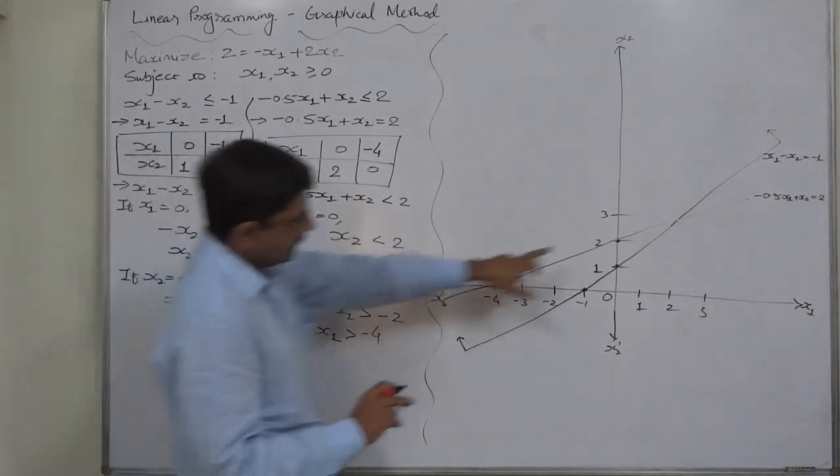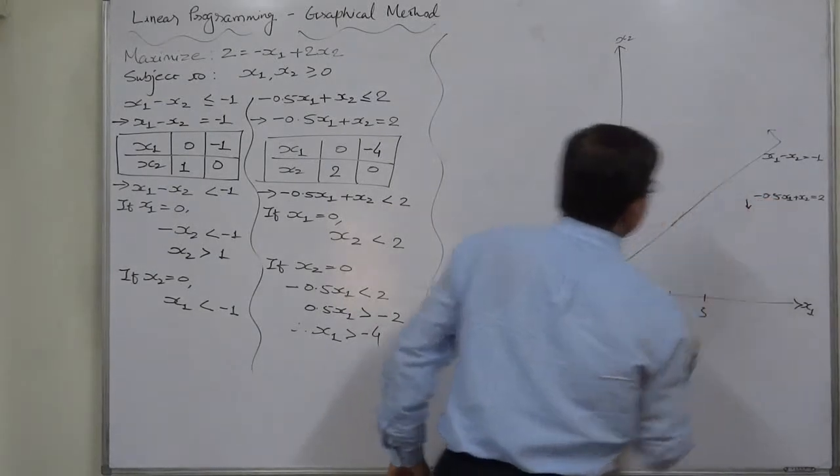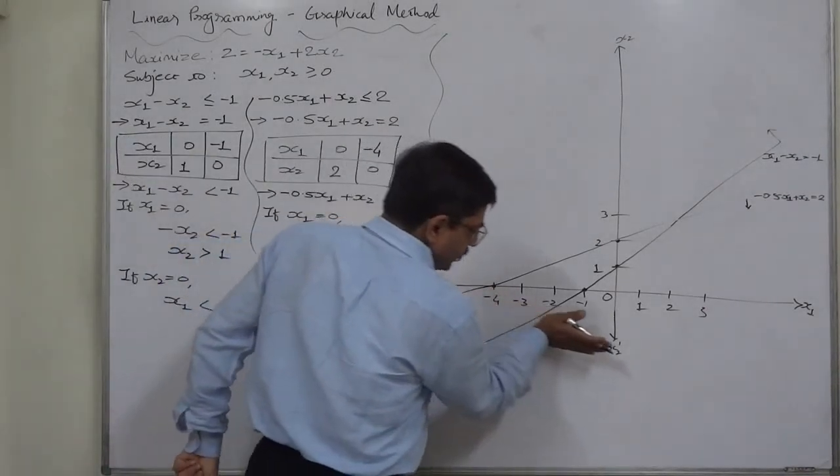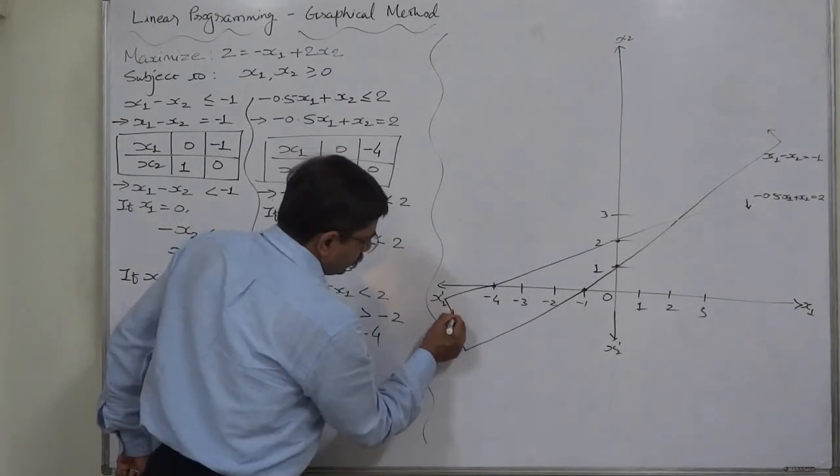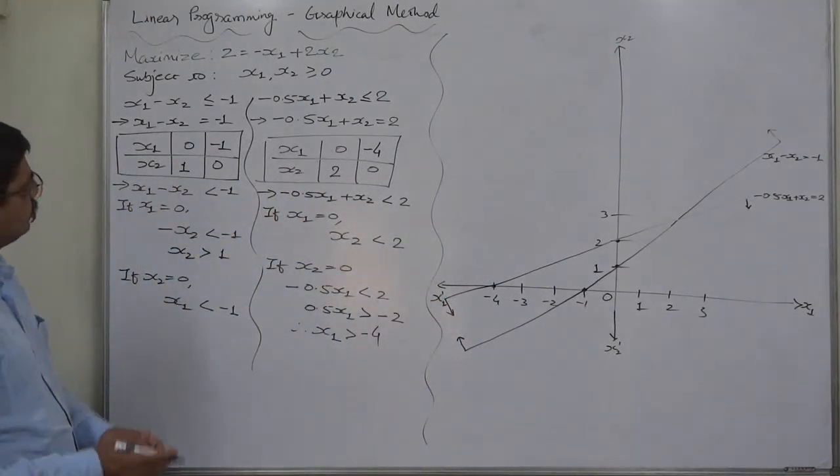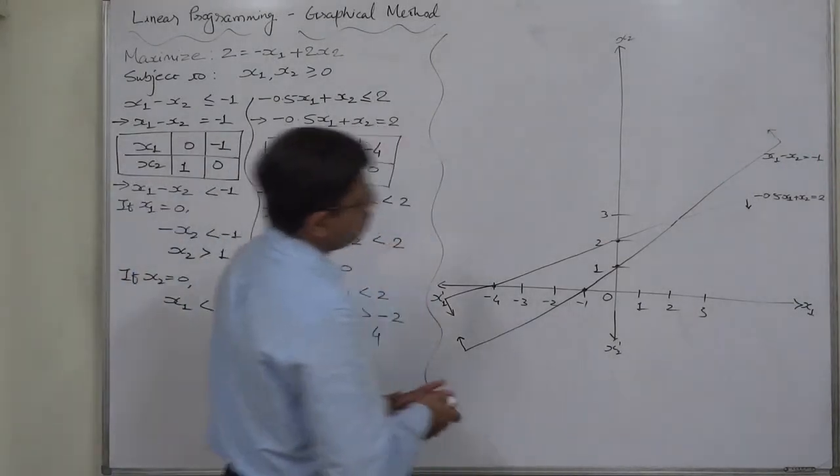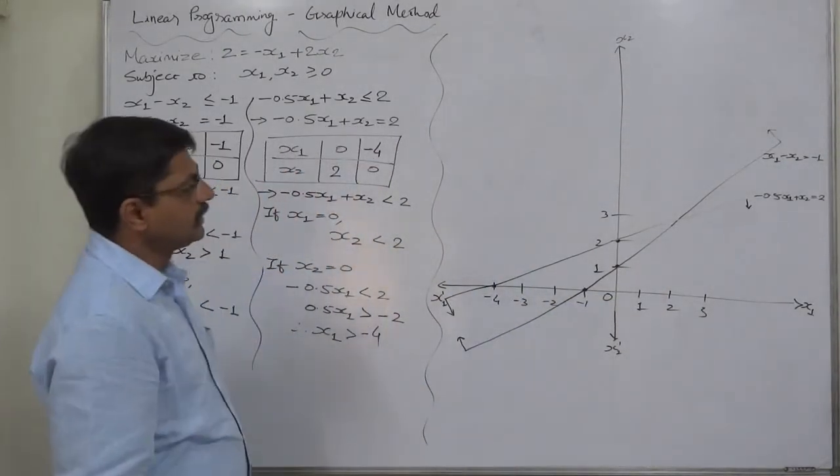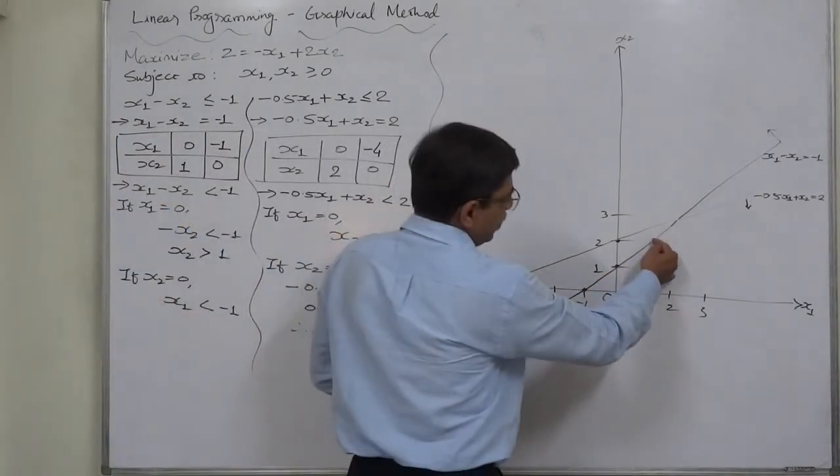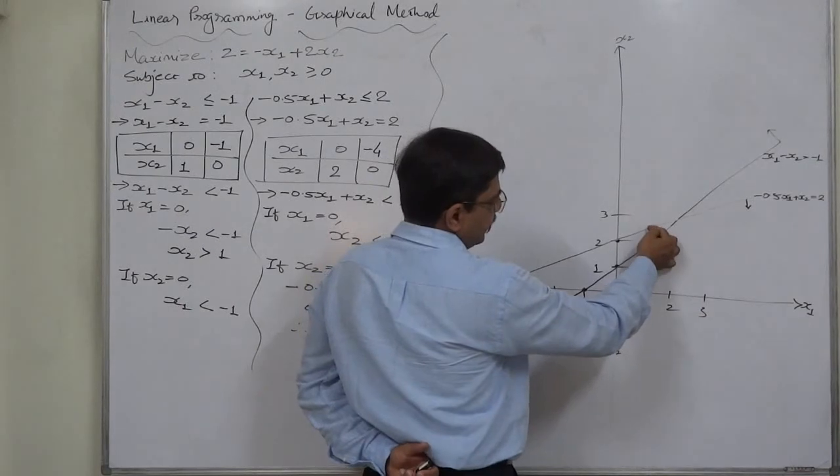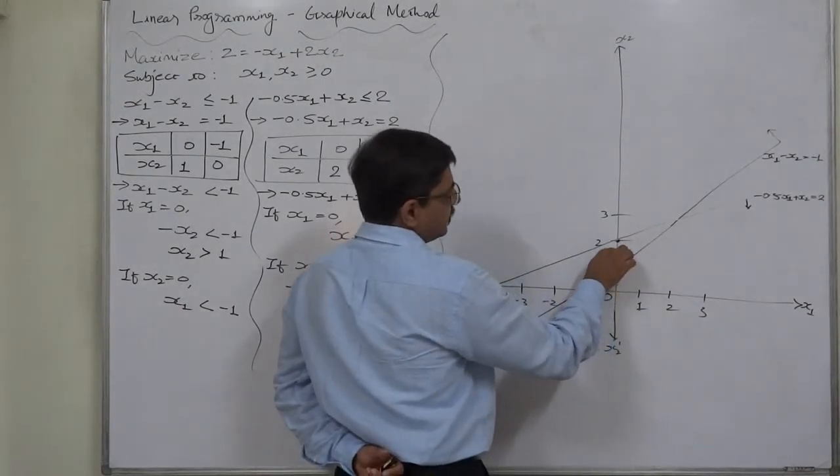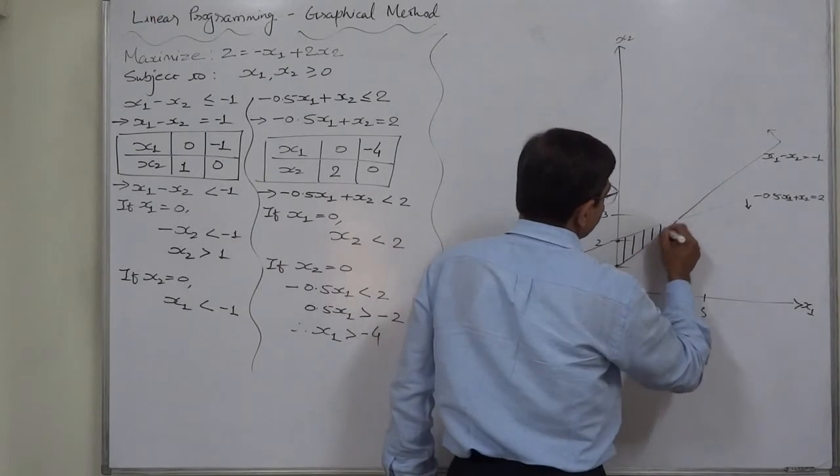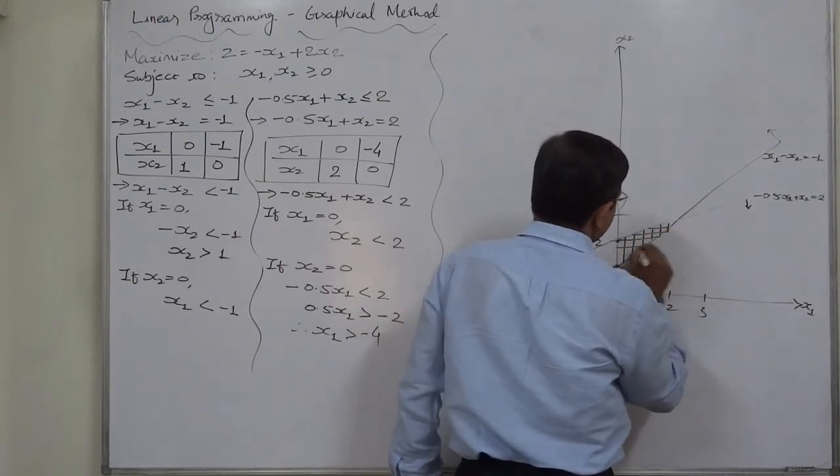x2 less than 2, so it will be below the line. And x1 greater than minus 4, greater than minus 4 means minus 3, minus 2, minus 1, 0 and so on, so over towards 0. Now there is no other constraint for which we can draw a separate line. This line has inequality part above it, this line has inequality part below it, and this has on the right-hand side. So we can say that this is the feasible region. A very small part of the graph is feasible region.